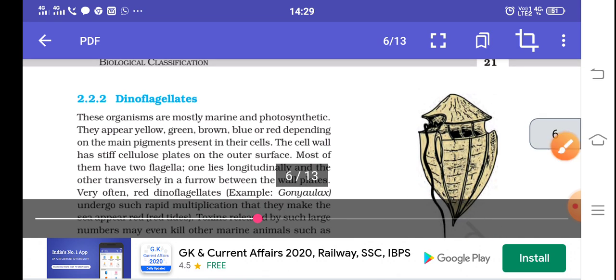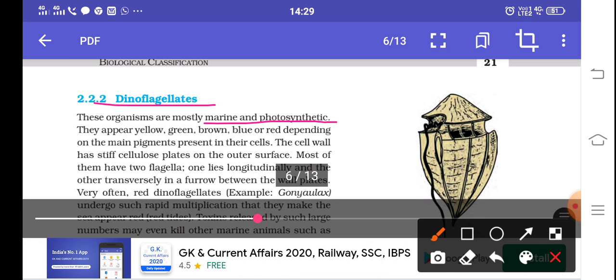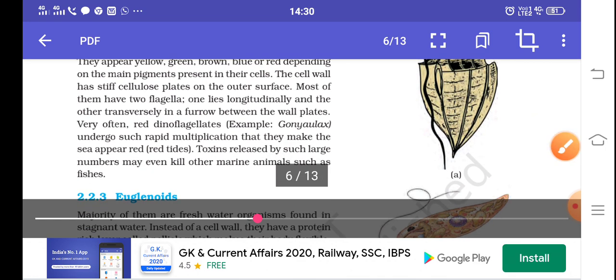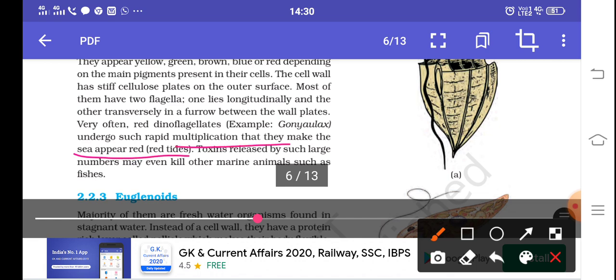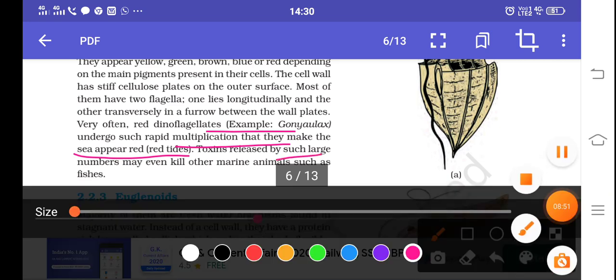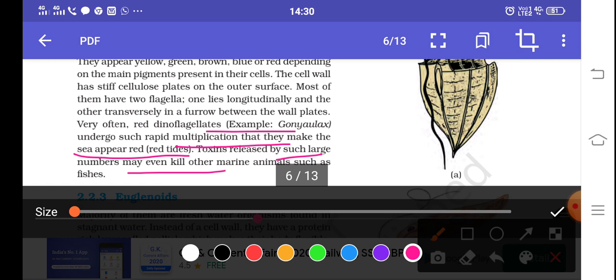Next is Dinoflagellates. Dinoflagellates are known for having two flagella. They are marine photosynthetic organisms with various pigments including yellow, green, brown, blue, and red. They have stiff cellulose plates and two flagella, one longitudinal and one transverse. As we see here, there are cellulose plates between the longitudinal and transverse flagella. Red dinoflagellates like Gonyaulax undergo rapid multiplication. Dinoflagellates are known as red algae and cause red tides. When dinoflagellates are present in large numbers, the water looks red.